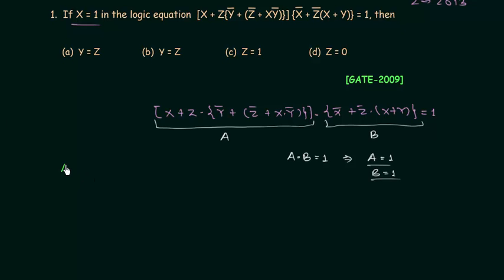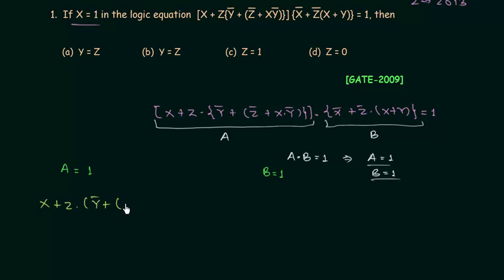We have two conditions. In the first condition A is 1, and in the second condition B is equal to 1. Let's try to obtain the relation between x, y, and z using these two conditions. For A is 1: x OR z AND y complement OR z complement OR x AND y complement is equal to 1.